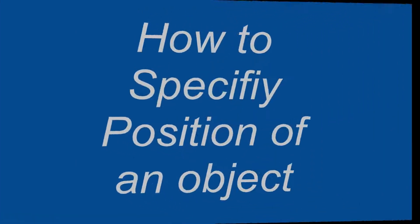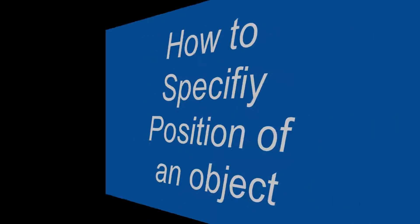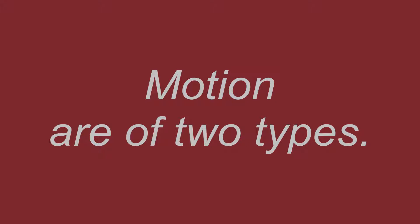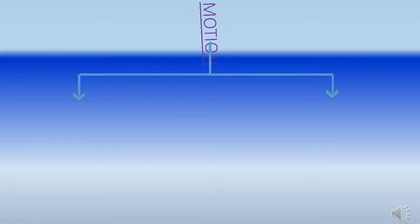Till now we discussed about how to identify or give the position of an object, and also discussed rest and motion. Now I am going to explain about kinds of motion. There are two kinds of motion which I am going to explain in this video. Motion are of two types: uniform motion and non-uniform motion.